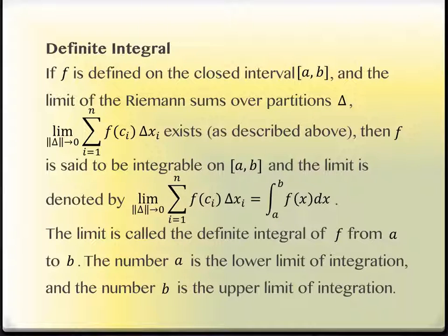This limit as these widths are going to zero of the height times the width is called the definite integral. We've seen this integral symbol before, but what we haven't seen is letters on the top and the bottom. These letters A and B are called the lower limit and the upper limit of integration. They don't necessarily mean smaller and larger.